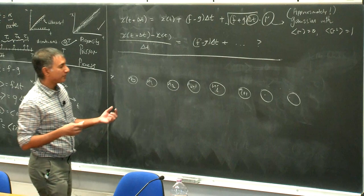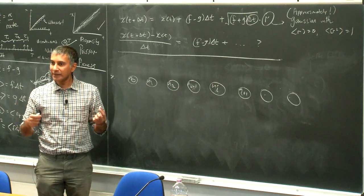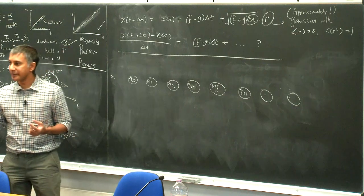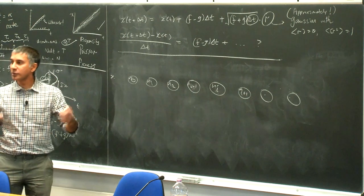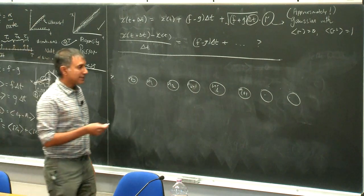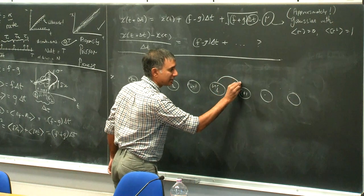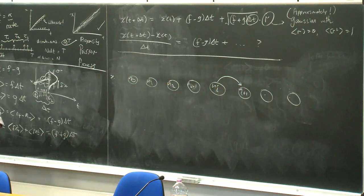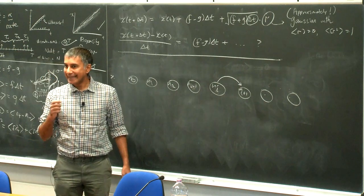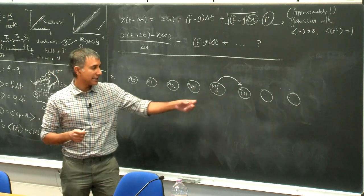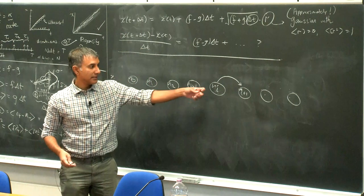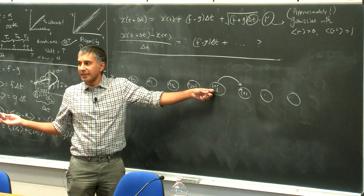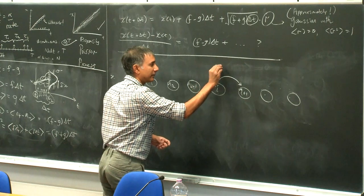At any point in time, any one of these cells could gain a molecule — transitioning from one bin to the next. In a small time interval δt, the number of cells that transition from state i to state i+1 must be proportional to the number of cells already in that state, since all cells are working independently. That number is proportional to n_i times the rate at which each cell could add a molecule — the probability that a cell added a molecule in that time interval.